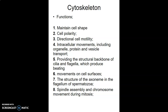The functions of the cytoskeleton include maintaining cell shape, cell polarity, and cell motility — responsible for movement of organelles and vesicles. They provide a structural backbone to cilia and flagella enabling them to beat, contribute to the axoneme structure in the flagellum of spermatozoa, and are involved in spindle assembly and chromosomal movement during mitosis.